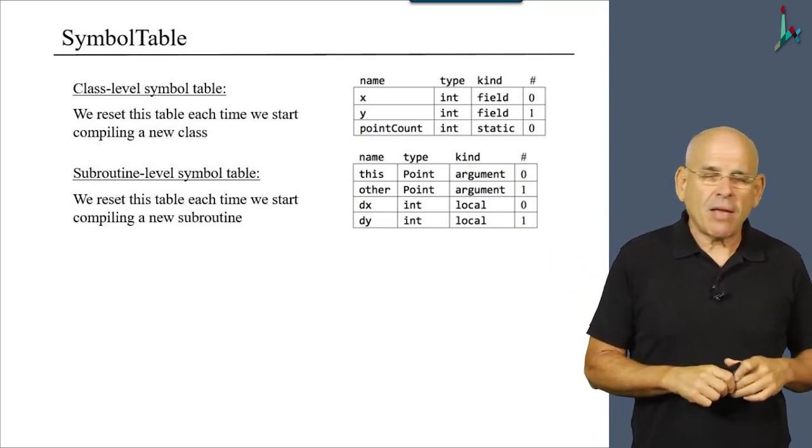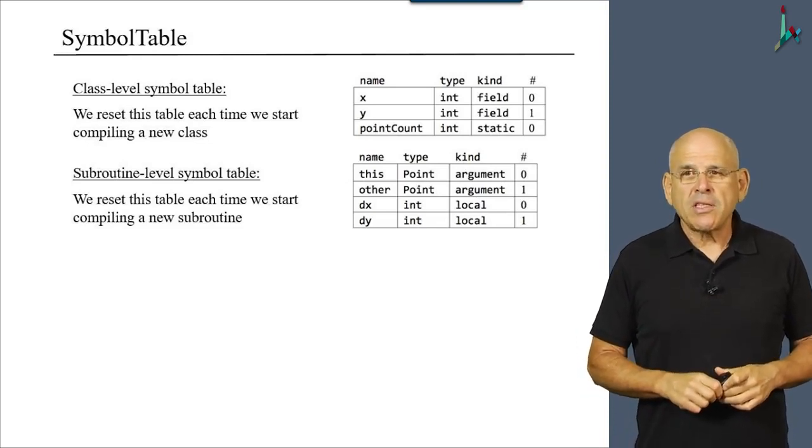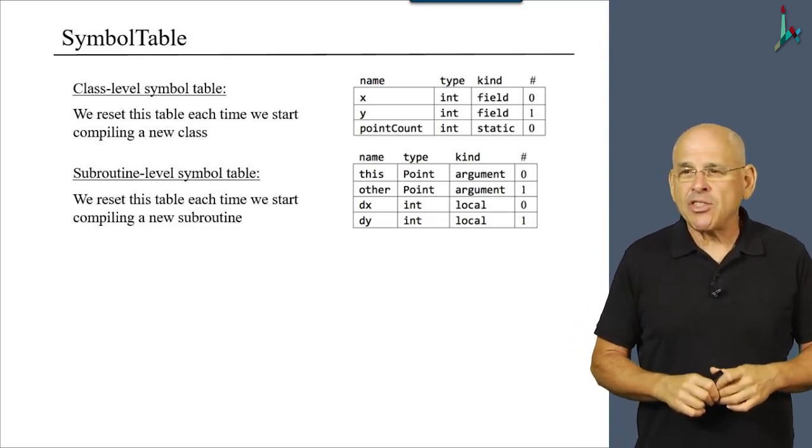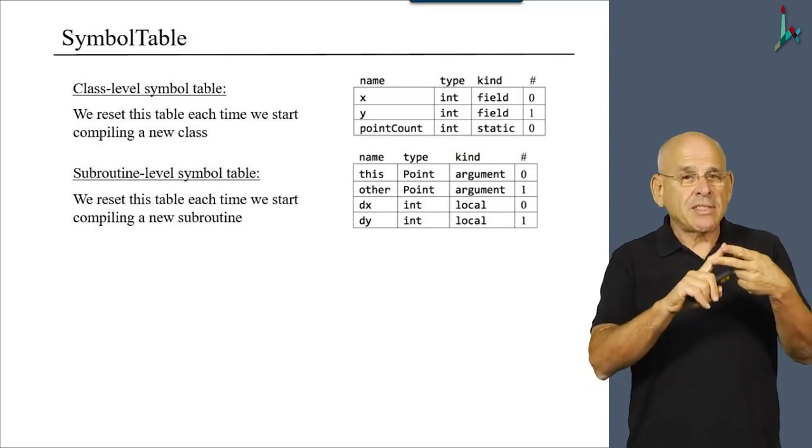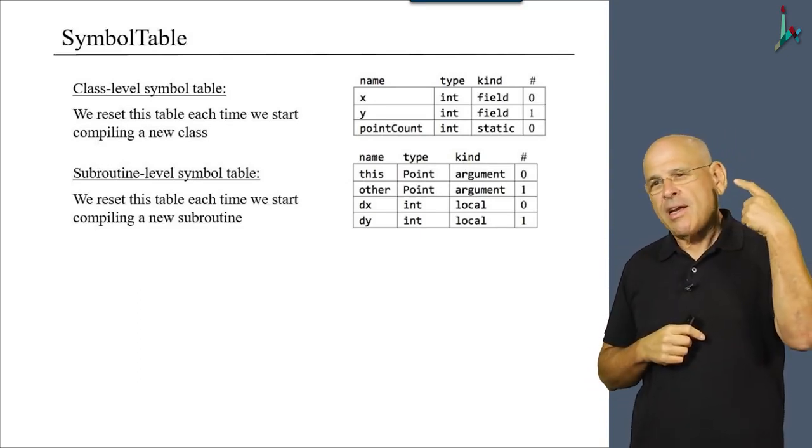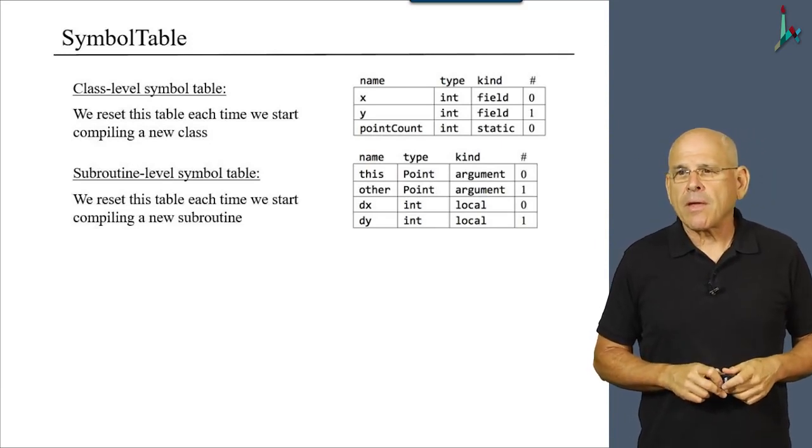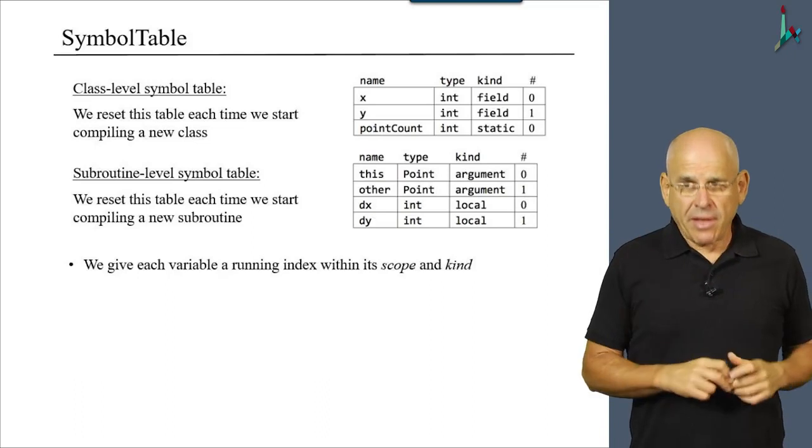So the symbol table class, if you implement it as a class, let's say in Java, is going to have two instances only. A class table symbol table and a subroutine symbol table.